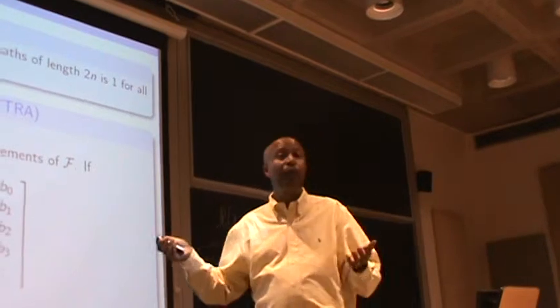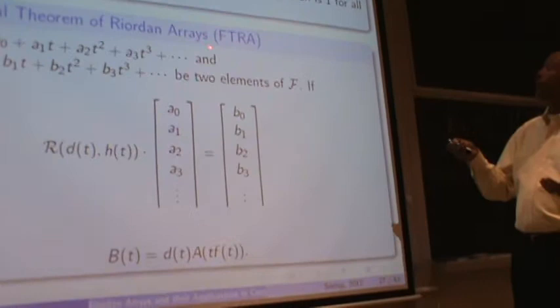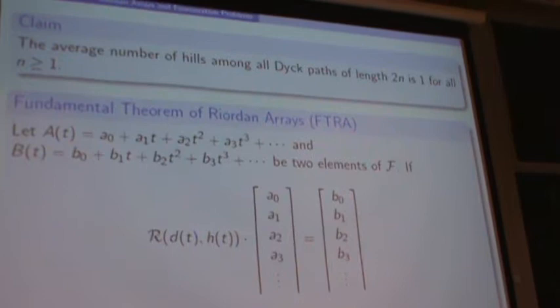If you want to prove something like this, you can simply apply the notion of Riordan arrays, but just add one more thing: the so-called fundamental theorem of Riordan arrays. This is Lou Shapiro's theorem, and it's a very simple theorem to prove.